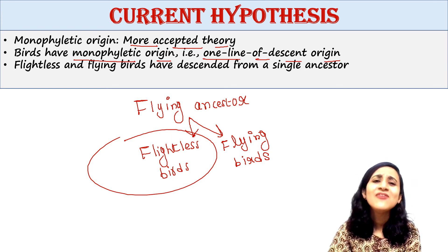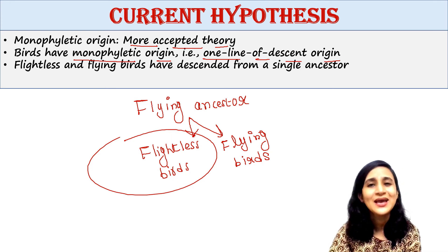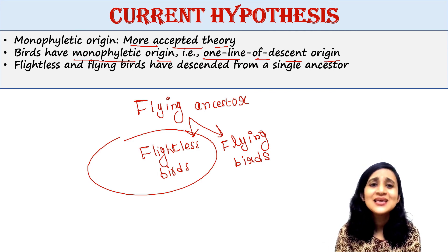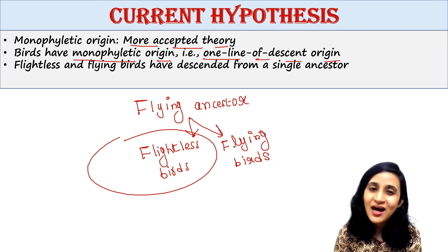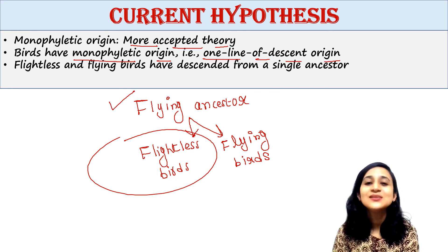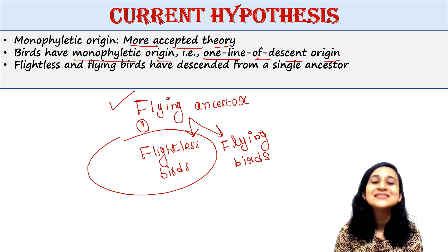They had few competitors or enemies, so they didn't require to fly anymore and hence lost their wings. Flying is an expensive process in terms of energy. Birds mainly fly to search for food or to escape from enemies. If they have enough food on land and no enemies, then there is no need to fly — they didn't fly and lost their wings. Otherwise, all birds evolved from the flying ancestor, so this is one line of descent: monophyletic origin.